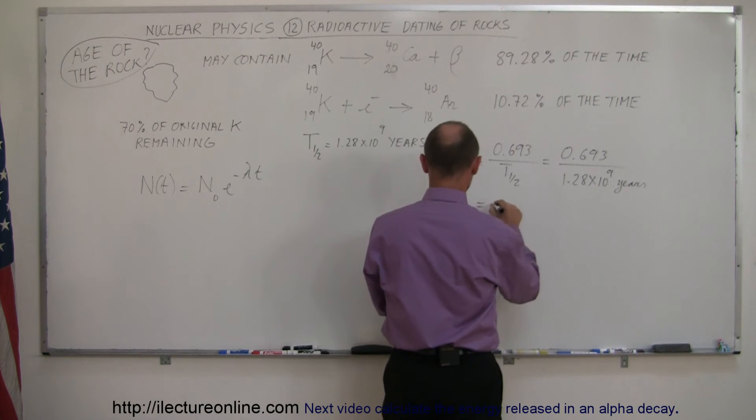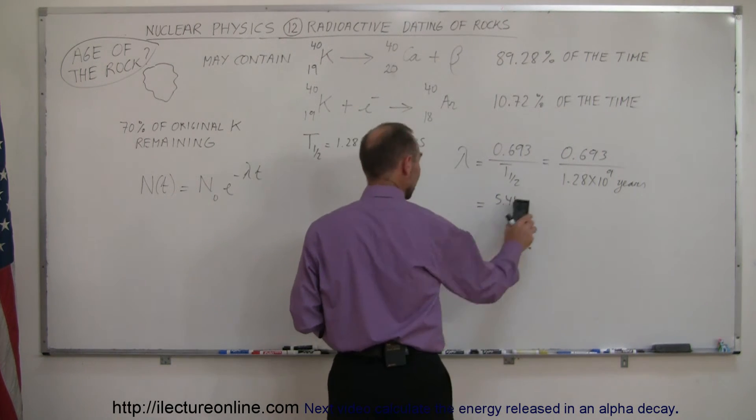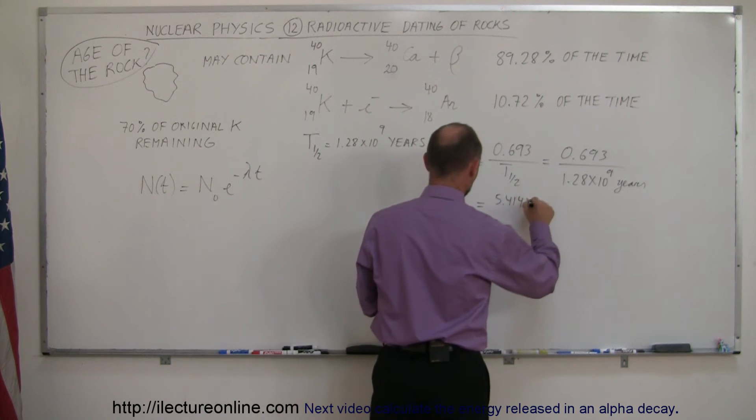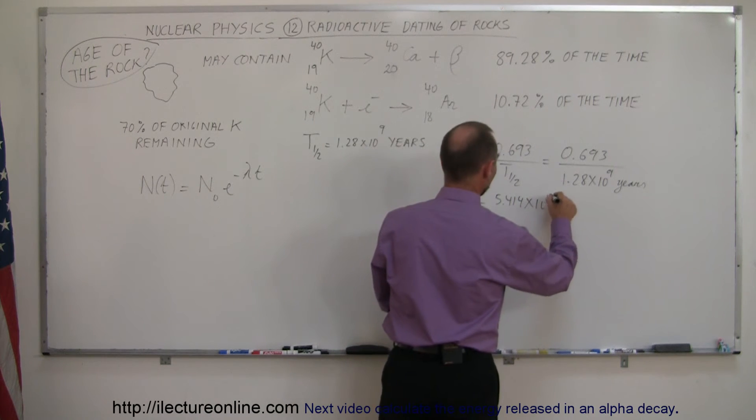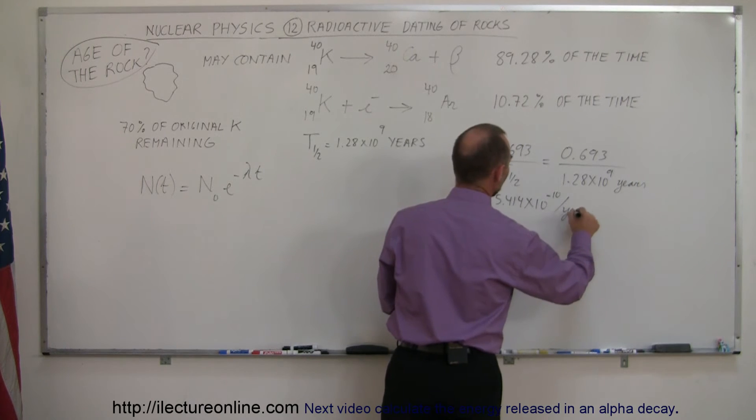and so that would be equal to 5.414 times 10 to the minus 10 per year. All right,